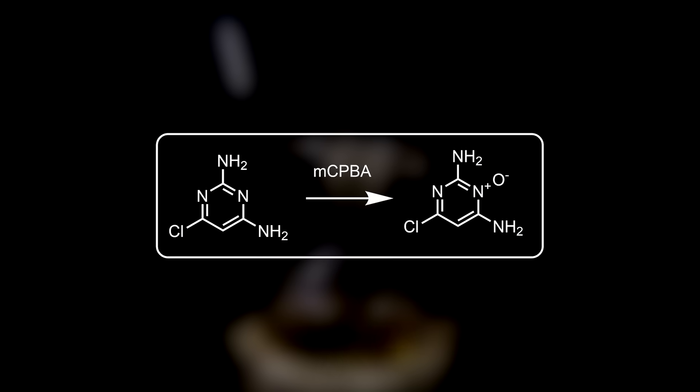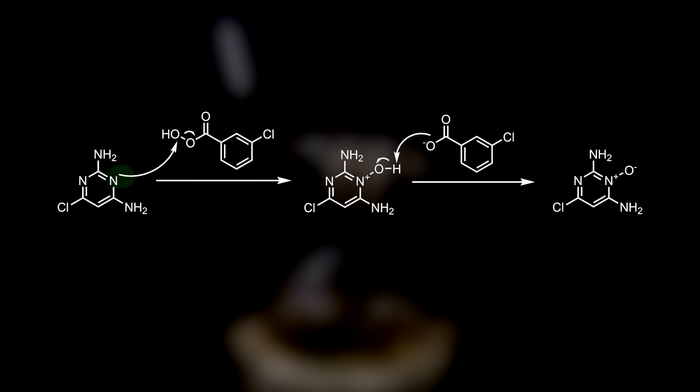In this reaction M-chloroperoxybenzoic acid oxidizes the pyrimidine nitrogen between the two primary amines to give an N-oxide. How it proceeds is first through nucleophilic attack of the pyrimidine nitrogen onto the peroxy acid, picking up a hydroxyl. This is subsequently deprotonated by the formed benzoate to give the N-oxide. The two adjacent amines have a stabilizing effect on the N-oxide, which is why it prioritizes this nitrogen and also makes it less likely to happen again on the other nitrogen.